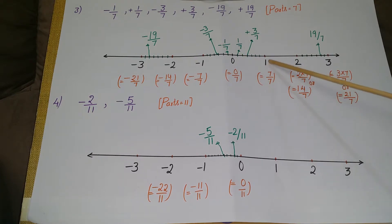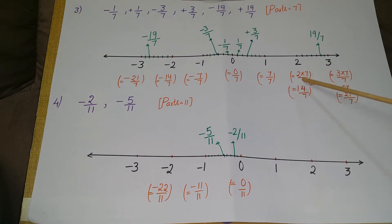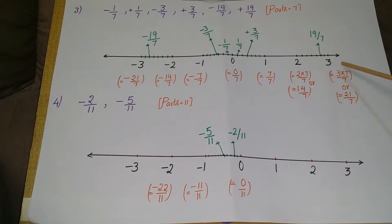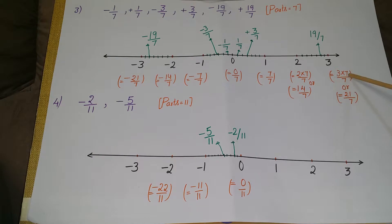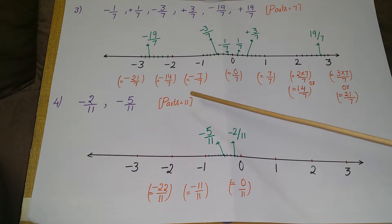Write 0 as 0/7 and 1 as 7/7. For 2, multiply by 7 to get 14/7. For 3, multiply by 7 to get 21/7. The same numbers can be written on the left side for negatives.